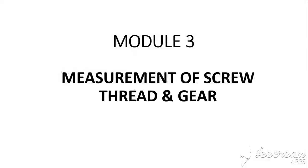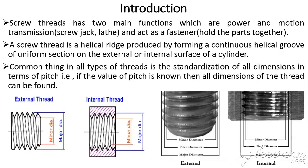In this video we are going to study about measurement of screw thread and gear parameters. Screw threads basically have two main functions. The first function is power and motion transmission, as in the case of a screw jack or lathe. The second function is that it can act as a fastener — to hold or clamp parts together in an assembly. A screw thread can be defined as a helical ridge produced by forming a continuous helical groove of uniform section on the external or internal surface of a cylinder.